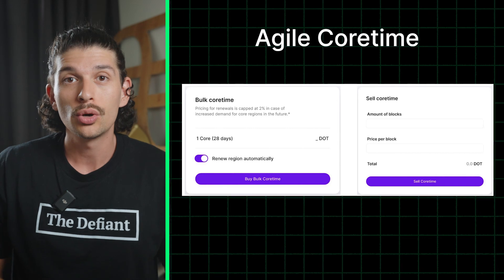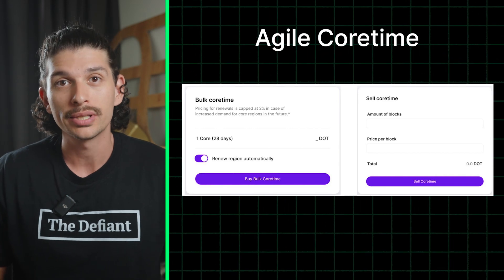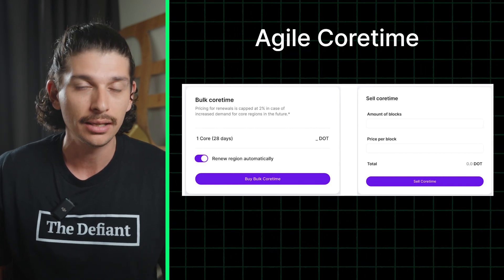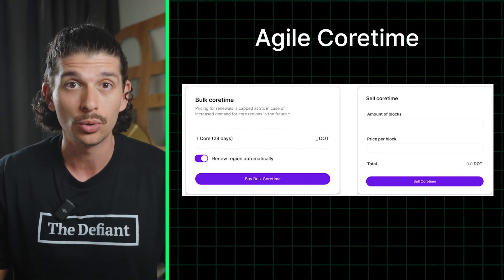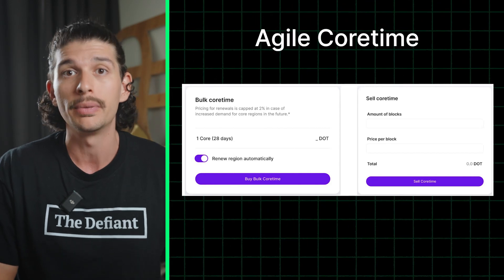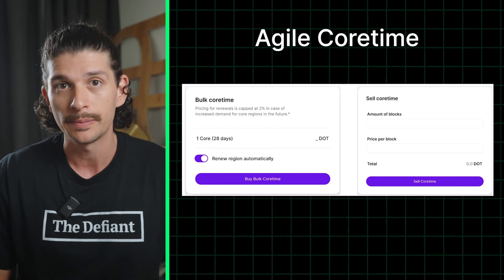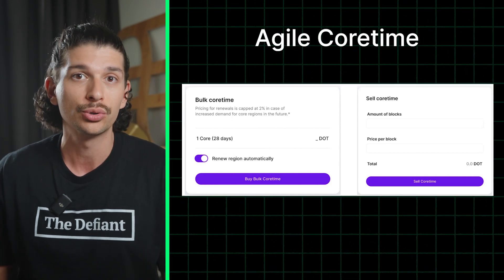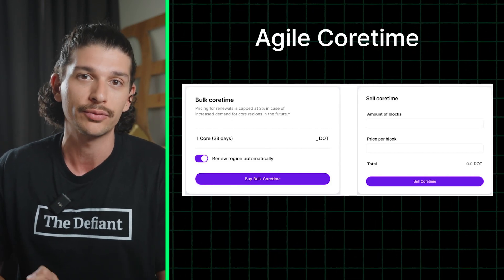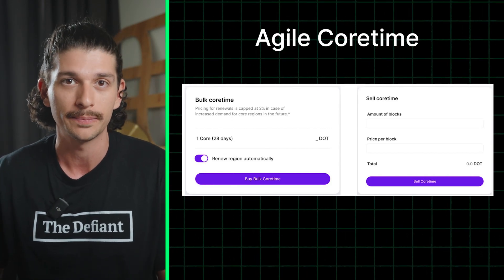There is also an agile core time marketplace, which is a secondary marketplace for core time that allows for optimized usage of the network amongst developers, and ensures that excess core time ownership doesn't have to go to waste.